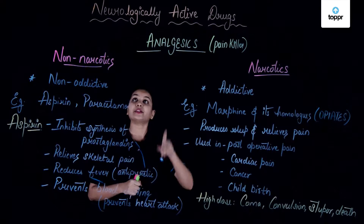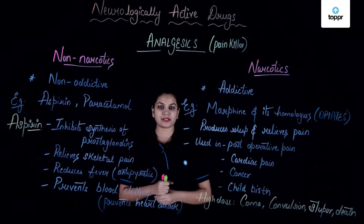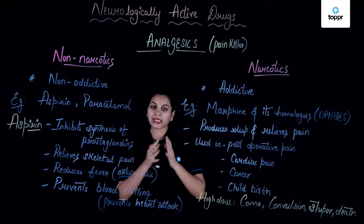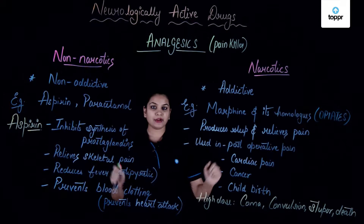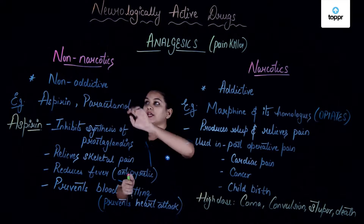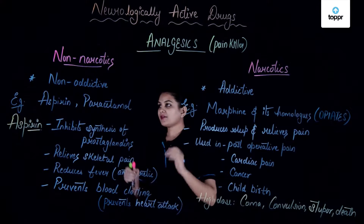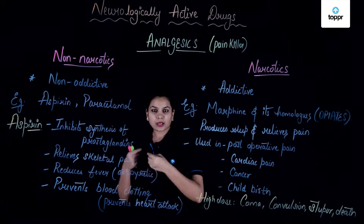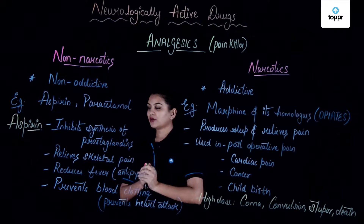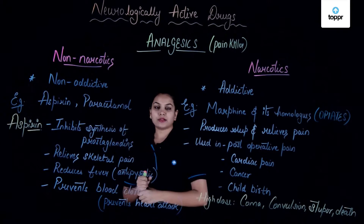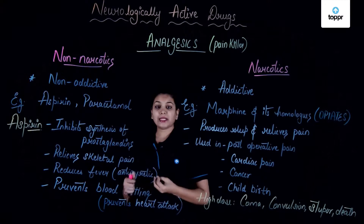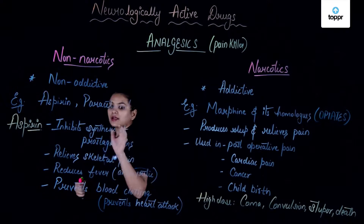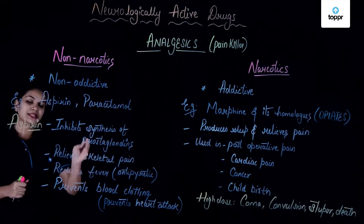Analgesics are the second category of neurologically active drugs. They are called painkillers because they help in relieving pain. Analgesics are divided into two broad categories: non-narcotics and narcotics. Non-narcotics are non-addictive — even if taken many times, you do not get addicted to them. The most common examples are aspirin and paracetamol, which we usually take when we have any kind of pain. Looking closely at aspirin, the first way it relieves pain is by inhibiting the synthesis of prostaglandins.